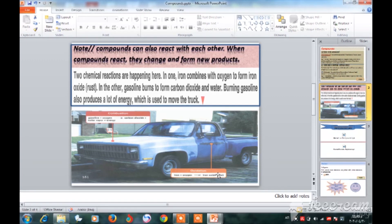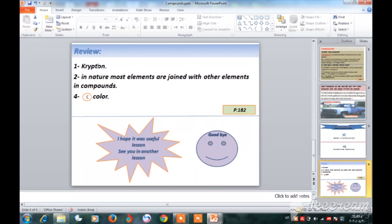Review, page 182. Number one: please look at the periodic table for the element that has 36 protons. Which has 36 protons? Name: krypton is the correct answer. Number two: in what form are most elements in nature? What does this mean?